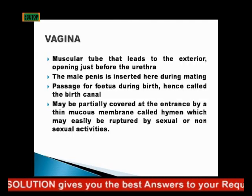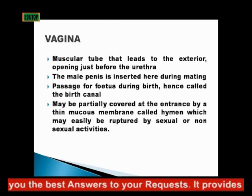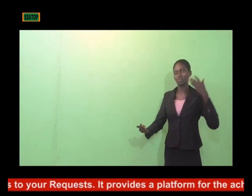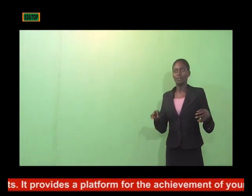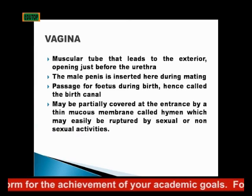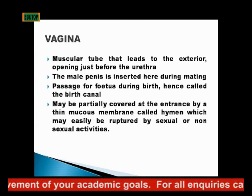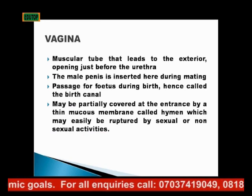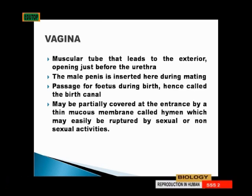The vagina is the muscular tube that leads to the exterior, opening just before the urethra. The vagina is the place where the male penis is inserted during mating or sexual intercourse. It is also the passage for the fetus during childbirth, which is why the vagina is also called the birth canal.